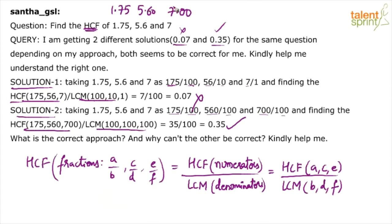Now, after making the number of decimal places equal, you have to convert them to proper fractions because for finding out HCF of fractions, we need numerator and denominator, right? So, 175 by 100 is 1.75, 560 by 100 is 5.6, and 700 by 100 is 7. And then apply the formula, HCF of numerators by LCM of denominators. So, simple. I mean, just one point which you need to remember is the number of decimal places have to be equal.